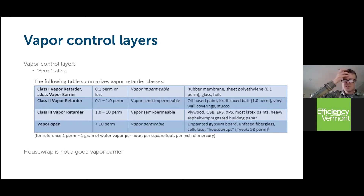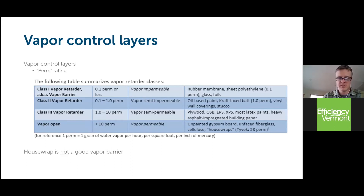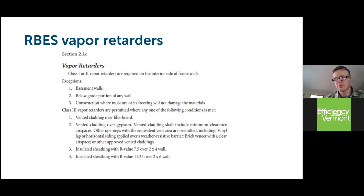Vapor control layers in building envelopes: the vapor control is your primary membrane or material to prevent the movement of moisture into a building assembly. We're talking about permeability ratings — perm ratings — for different materials. They're classified as class one, class two, and class three vapor retarders, as well as vapor-open materials. Class one or class two vapor retarders are required on the interior sides of all framed walls via RVs, except against concrete or below-grade basement walls. We'll talk about where your options lay in class one versus class two, and where class three vapor retarders — which are much more vapor-open — are allowed and sometimes encouraged for specific building types.